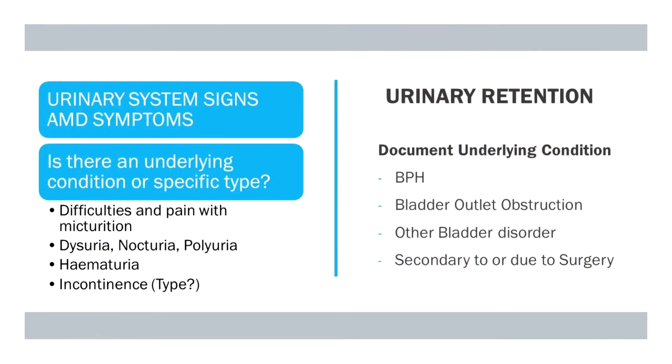In terms of urinary symptoms, we write a lot of these frequently, but they're often uncodable because they don't actually qualify the reason for them. If there are difficulties with pain or micturition — often prostatism-type symptoms — you can't just write 'prostatism.' It needs to be 'prostatism secondary to likely BPH' or 'prostatism secondary to likely prostate cancer.' There needs to be an underlying disease associated with those symptoms.